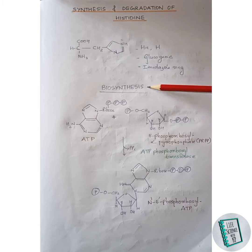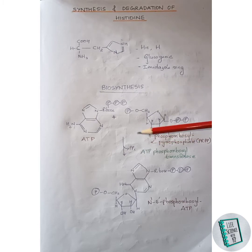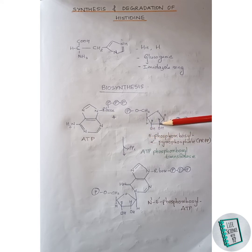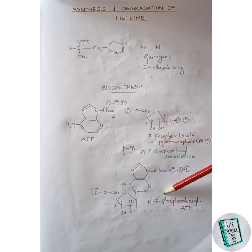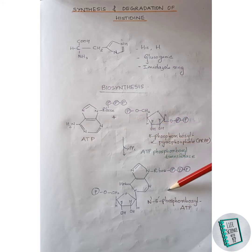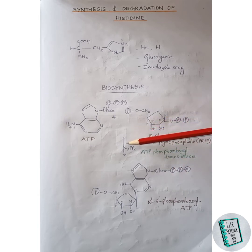Now let us move on to the biosynthesis of histidine. The first step is the condensation between an ATP molecule and a PRPP molecule to form N1-5'-phosphoribosyl ATP. During this step a pyrophosphate is released.